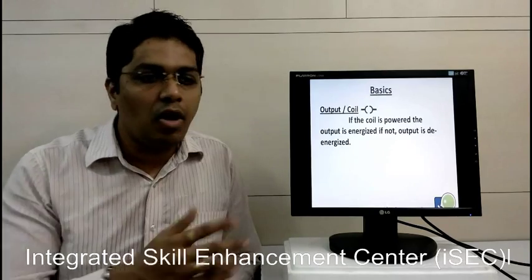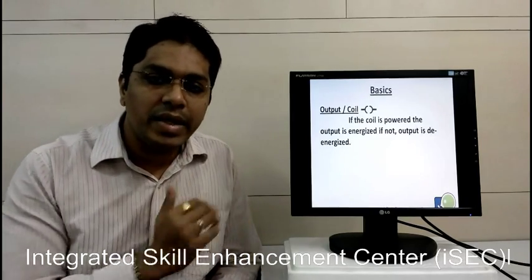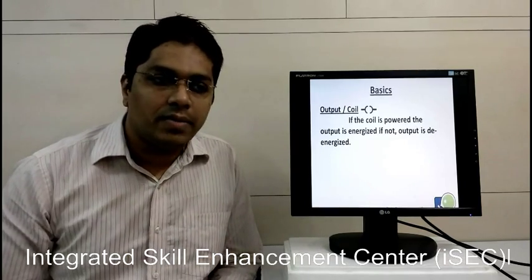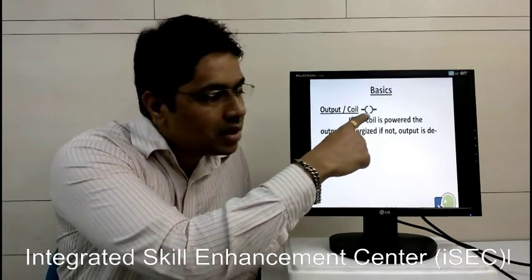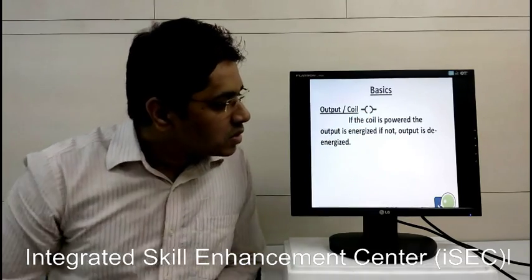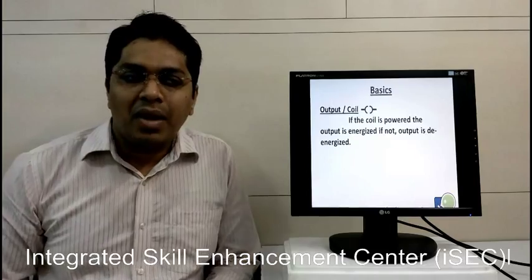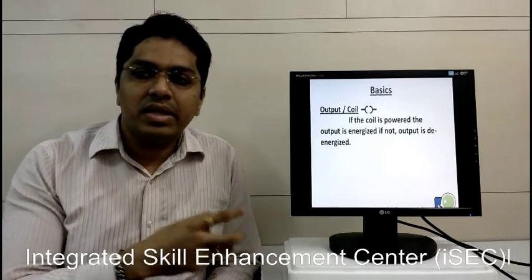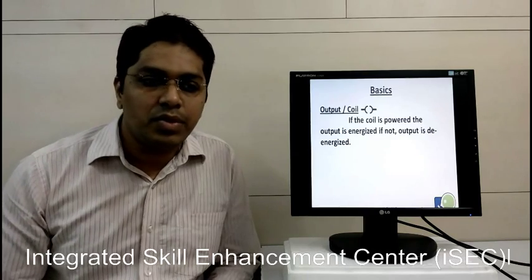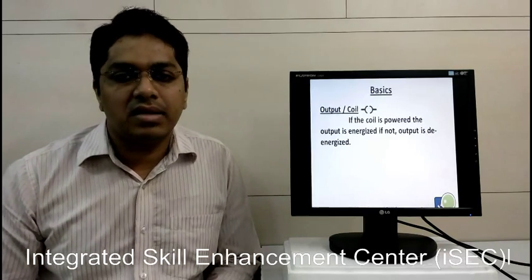The second thing is output. There will be input and there will be output. Output is called output or coil. The representation of coil in PLC programming, ladder programming, is something like this. If the coil is powered, whenever we give input, the output is energized. If not, there is no input and output is de-energized.